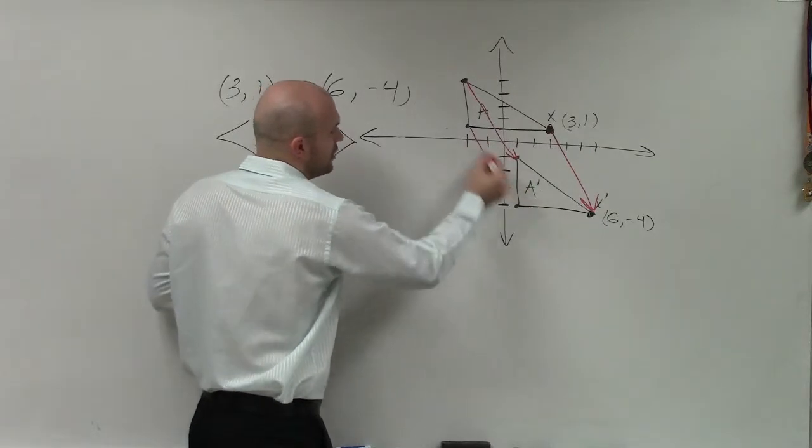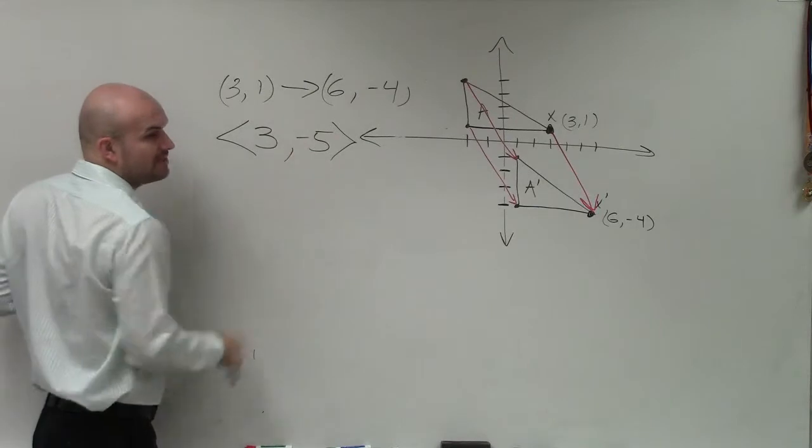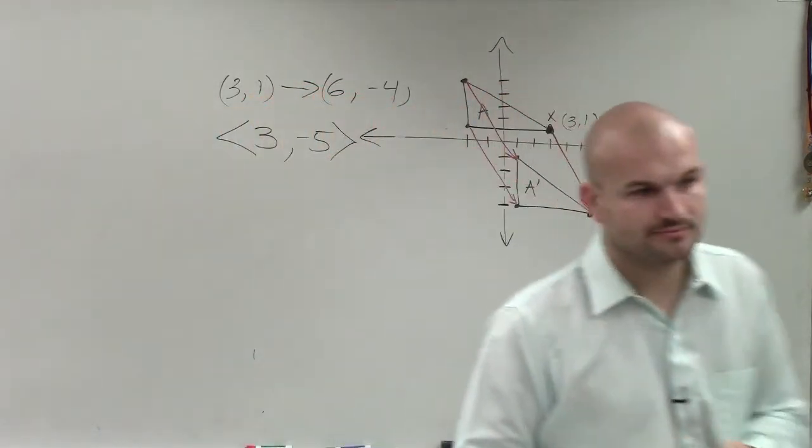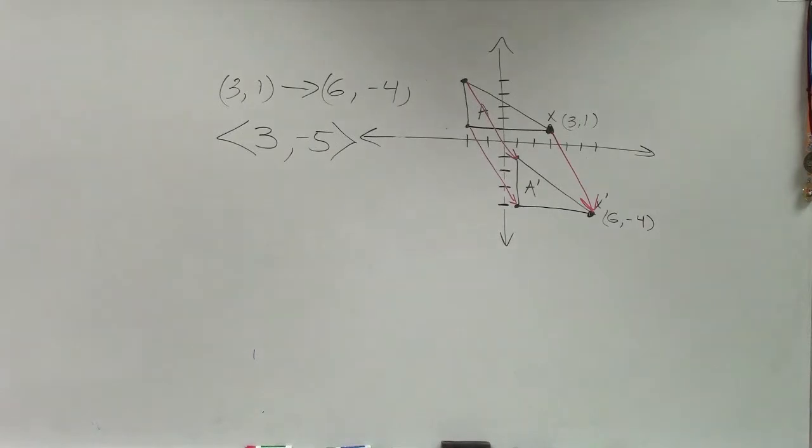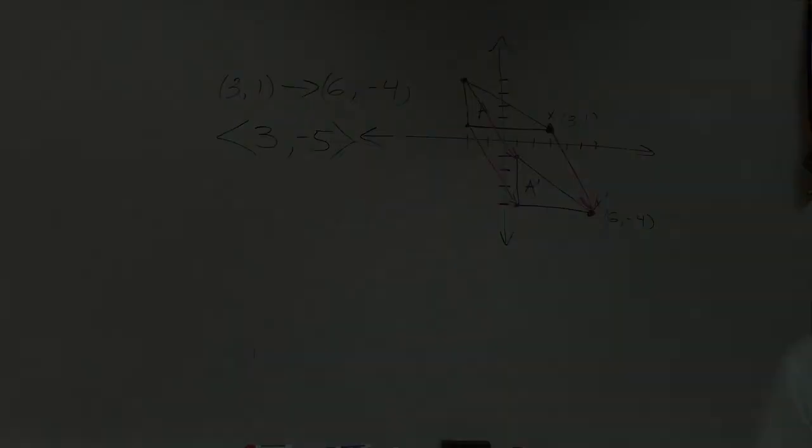So that's what we call the transformation vector. And the form, remember, has these pointed parentheses, and it'd be 3 comma negative 5. Any questions? Perguntas? OK. So let's go over your homework quiz from today.